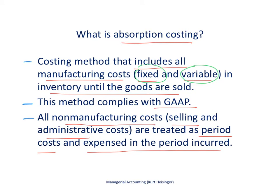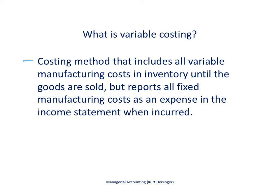Now let's look at variable costing. As the name implies, variable costing includes all variable manufacturing costs in inventory until the goods are sold — just like absorption costing in terms of what we do with variable manufacturing costs. However, the difference is that all fixed manufacturing costs are expensed as incurred, meaning they appear on the income statement as an expense in the period in which they are incurred.